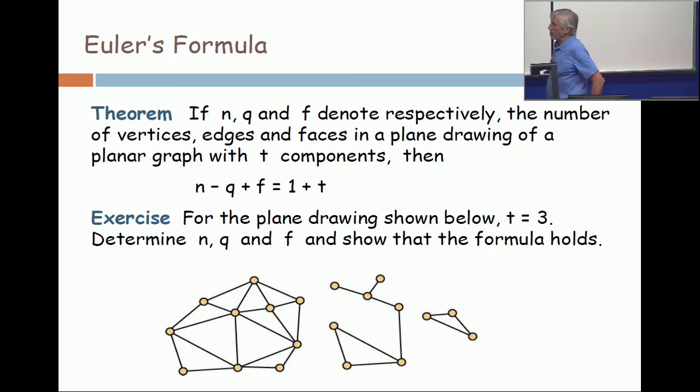Here I don't intend that this is three separate graphs. I intend that this is one graph with three components. So the formula is: when you take the drawing, if you count the number of vertices and subtract from it the number of edges and add to it the number of faces, then you get one more than the number of components.